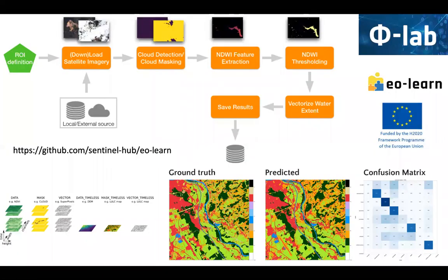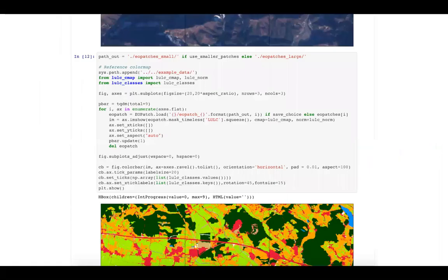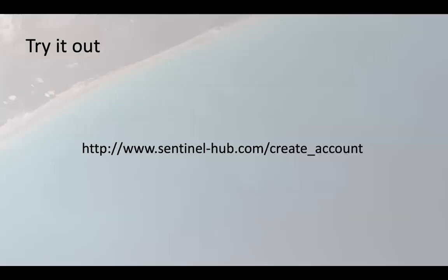For those working in machine learning, there is an open source library available which we made called EOLearn, which tries to bridge the gap between EO data and well-known machine learning frameworks such as TensorFlow and MXNet and alike. You can do all the steps that are usually needed to have the data ready, and you will find complete workflows on GitHub that you can use and reuse for different things, for example land cover classification. If you're interested to try it out and haven't yet, simply go to this URL and put your email in and you'll get a free account which you can then try out and play with.